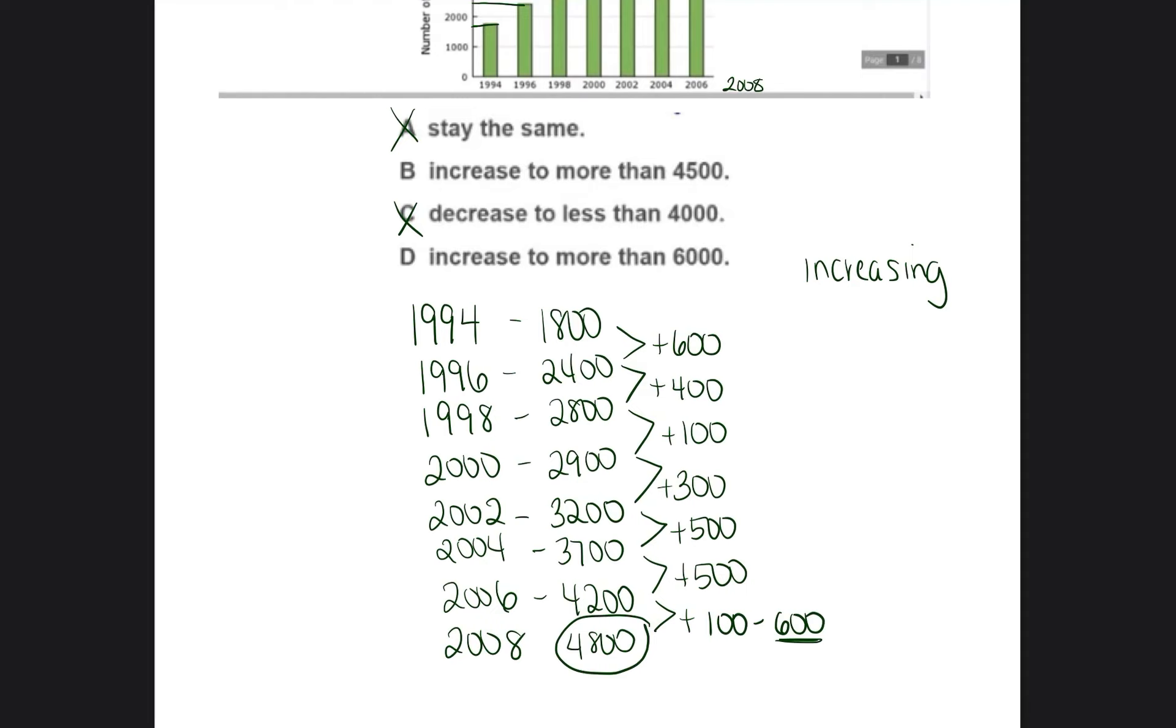So what is more likely to happen? In 2008, that it increased to more than 4,500 farmers markets? Or that it will increase to more than 6,000 farmers markets? So we estimated it to be about 4,800 in 2008. Is that closer to 4,500 or to 6,000? It's closer to 4,500. So it would be our estimate that in 2008, the number of farmers markets is going to increase to more than 4,500.